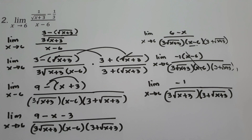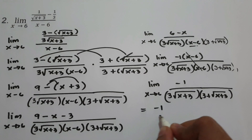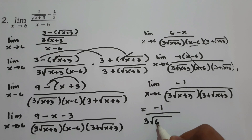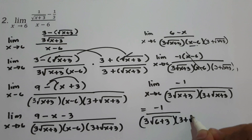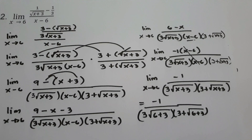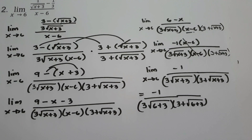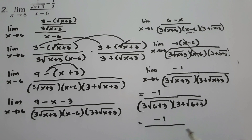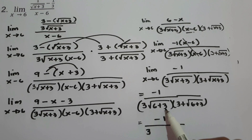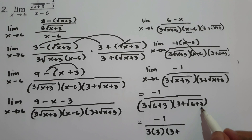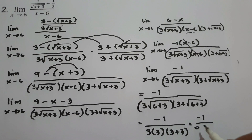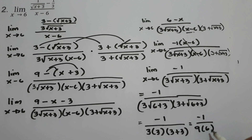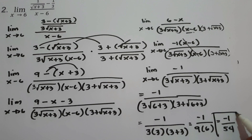Now we can substitute x equals 6. That gives negative 1 over 3 times square root of 6 plus 3, times 3 plus square root of 6 plus 3. Since 6 plus 3 is 9 and the square root of 9 is 3, we have negative 1 over 3 times 3, times 3 plus 3, which is 9 times 6. Our final answer is negative 1 over 54.